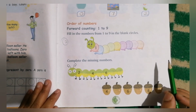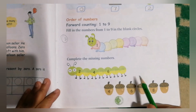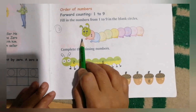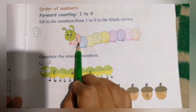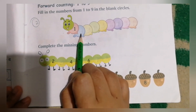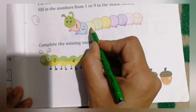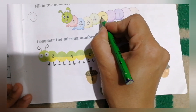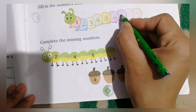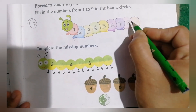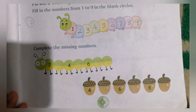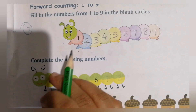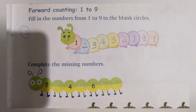Next we can see another activity: Order of numbers — forward counting, one to nine. If we are counting from one, that is forward counting. There they are given a picture of a worm and its body parts have missing numbers. First number is one. What is the next? After one comes two, then three, then four, then five, then six, then seven, then eight, then nine. This is called forward counting — starting from a small number to a big number.